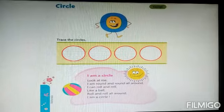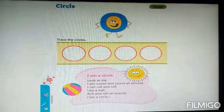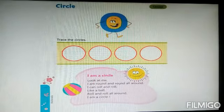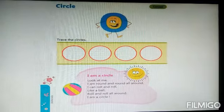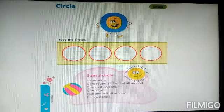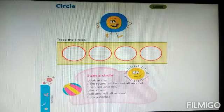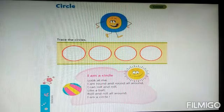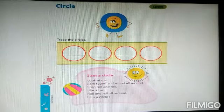Let us sing once more. I am a circle. Look at me. I am round and round, all around. I can roll and roll like a ball. Roll and roll all around. I am a circle. Good children.